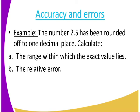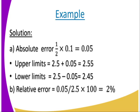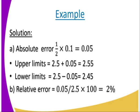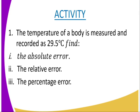The number 2.5 has been rounded off to 1 decimal place. Find the range and the relative error. The least unit is 0.1, so the absolute error is half times 0.1, which equals 0.05. The upper limit adds 0.05, the lower limit subtracts 0.05. The relative error is the absolute error divided by the actual measurement times 100, which equals 2%.